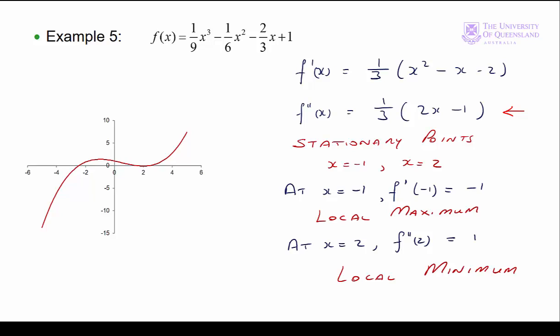We can see those points on the graph. At x = −1, we have a local maximum: to the left the slope is positive, and to the right it's negative, so the second derivative must be negative. At x = 2, we have a local minimum: to the left the slope of the function is negative, and to the right it's positive — going from negative to positive means the second derivative must be positive, confirming a local minimum.